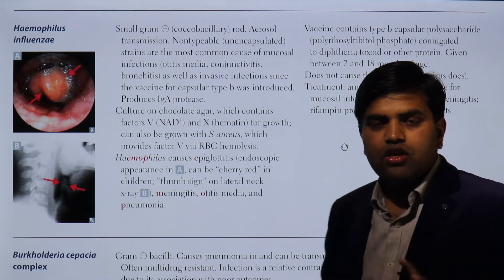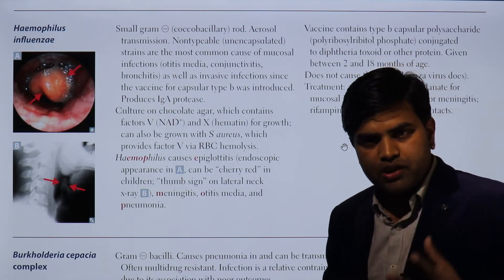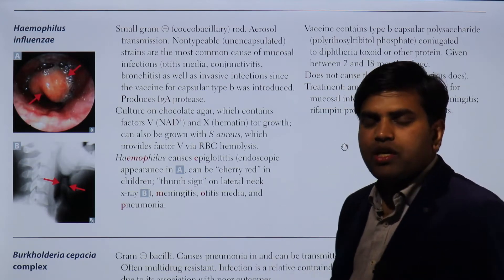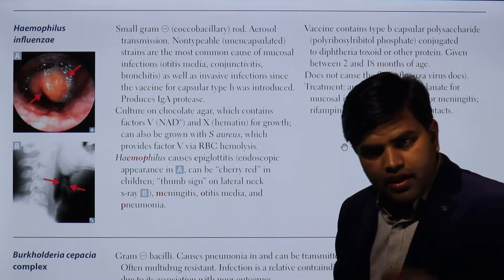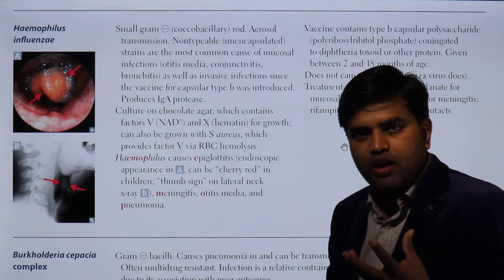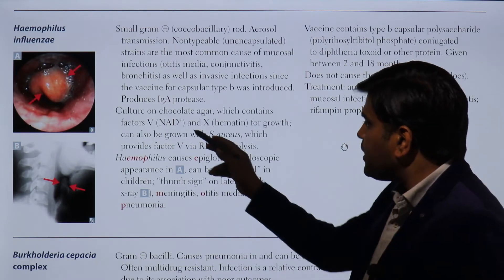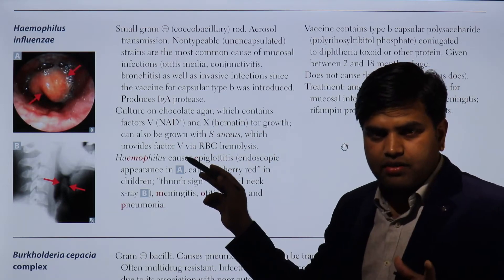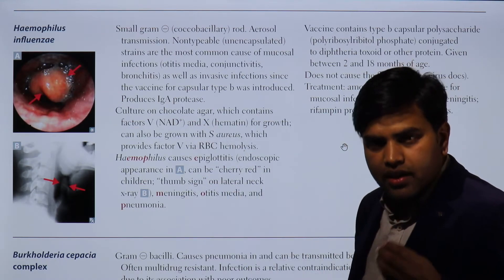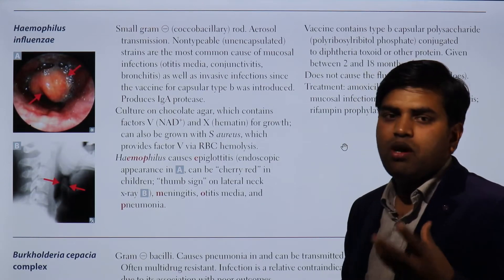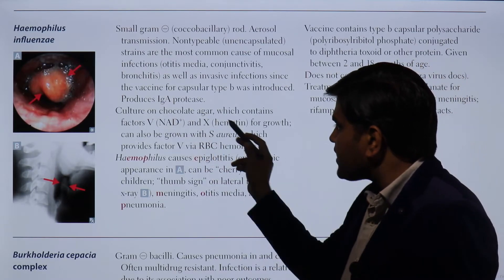Chocolate agar is a heated form of blood agar. When basic media is made into blood agar and then heated, the blood lyses and turns chocolate-colored. At 70°C, the RBCs get lysed and the V factor (NAD) that is stored inside the RBCs is released. Blood agar has X factor but no V factor; heating releases the V factor, making chocolate agar.